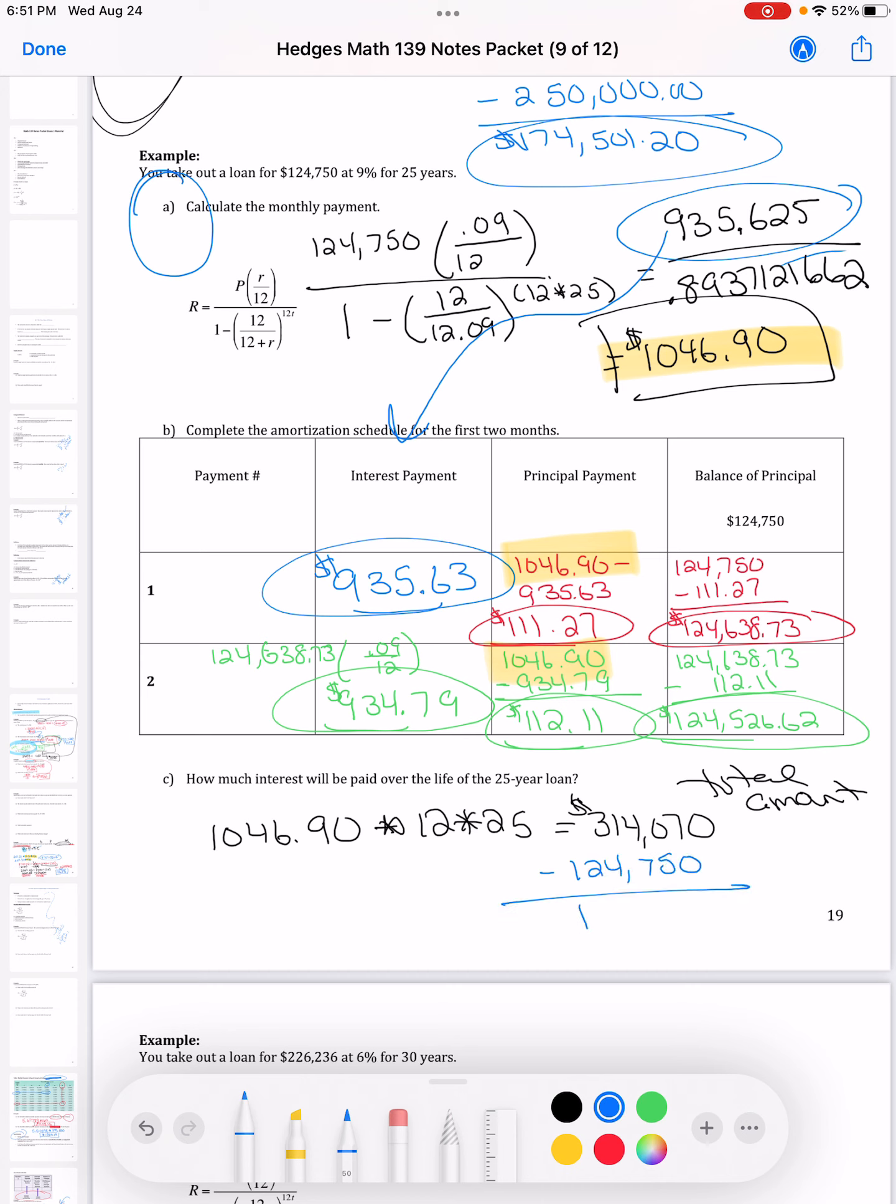The difference between those two tells me how much interest. And that's because the total amount, just to remind everybody, we've seen this a couple of times in different sections in class and in other videos, is equal to the original amount, the principal, plus the interest. So if I want to know just that interest, I subtract the principal from both sides.